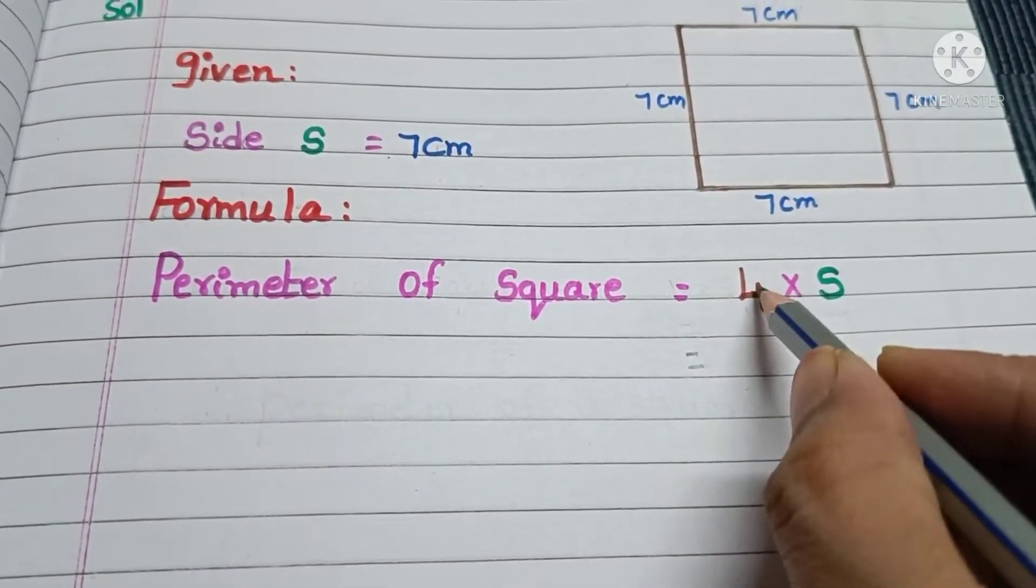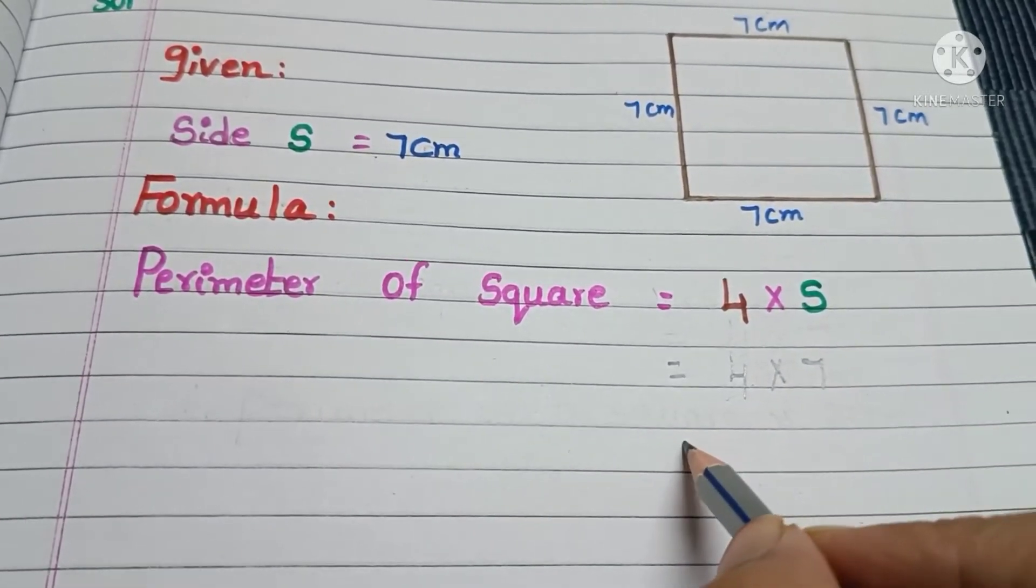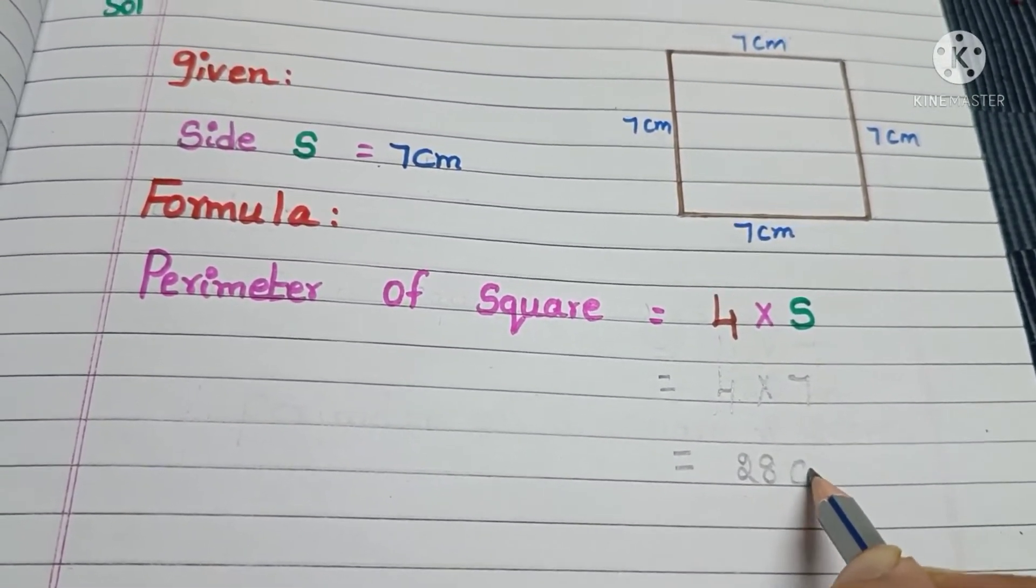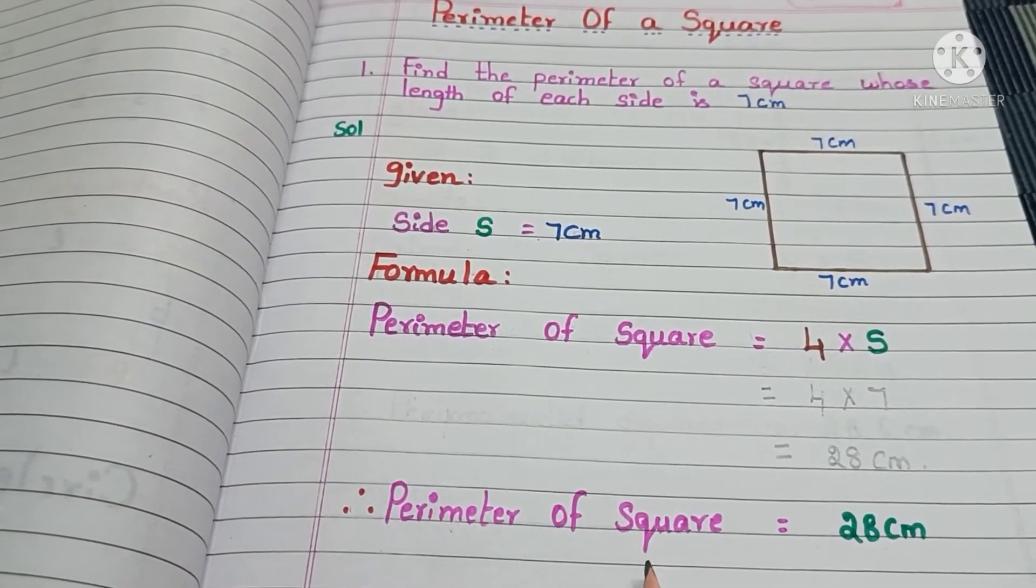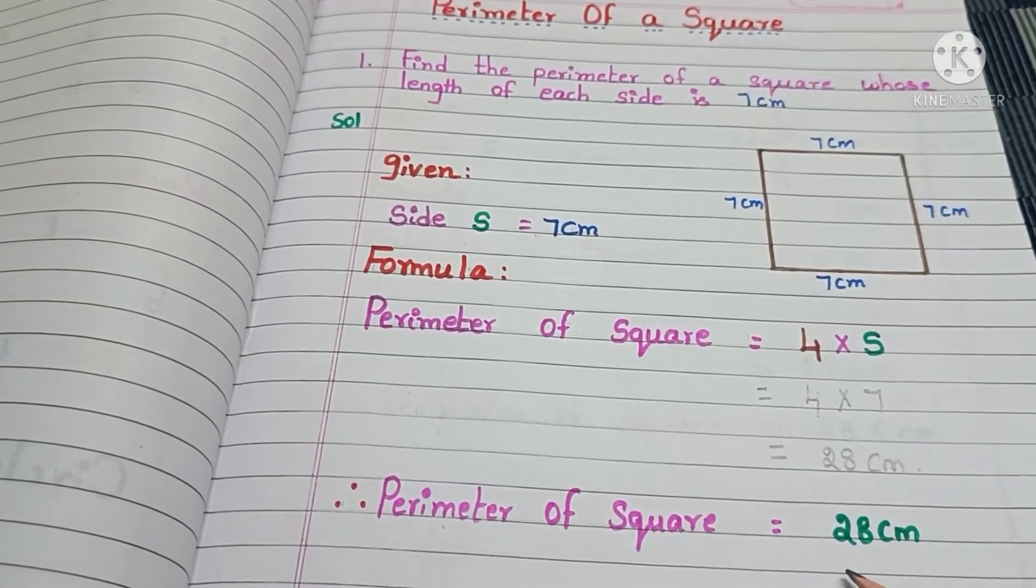That is equal to, copy down 4 times 7. 4 times 7 is 28 cm. Therefore, perimeter of a square whose length 7 cm is 28 cm.